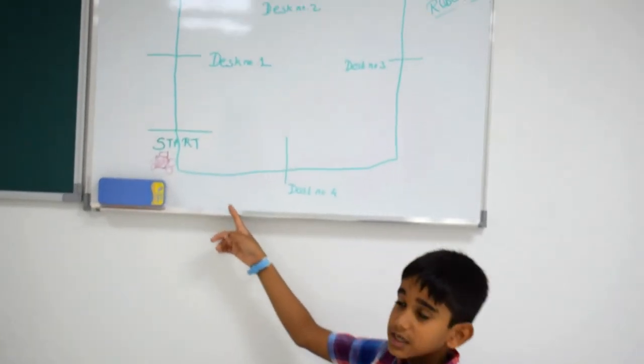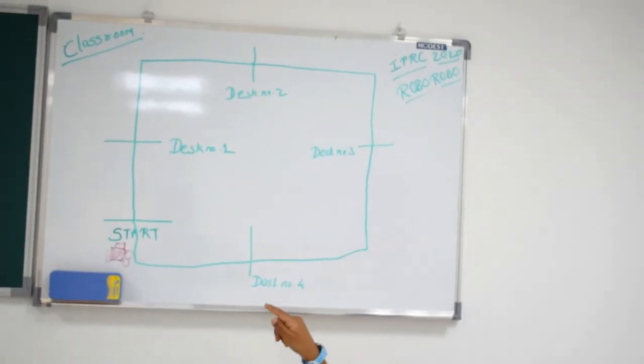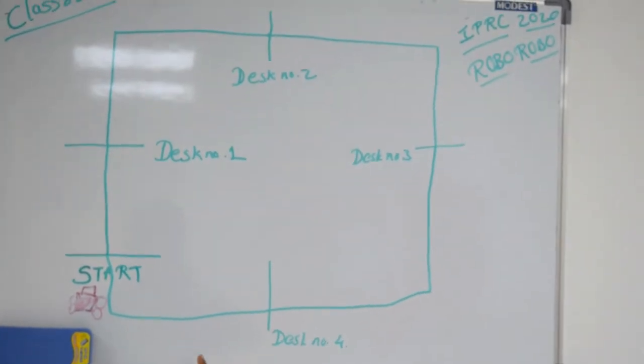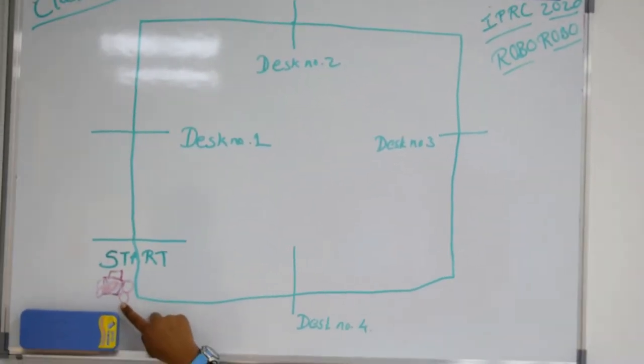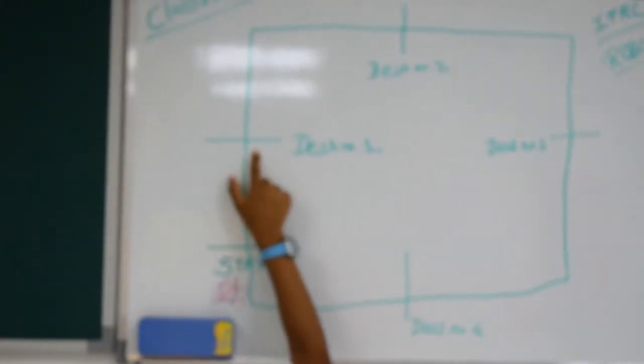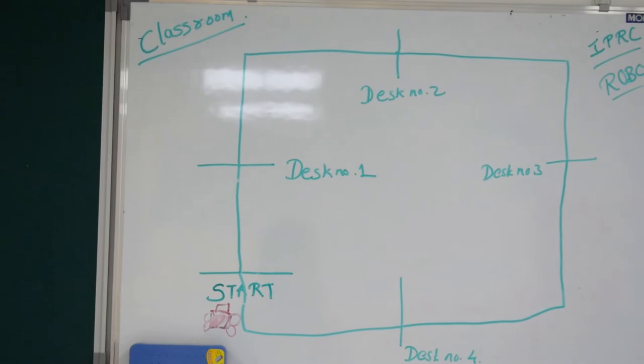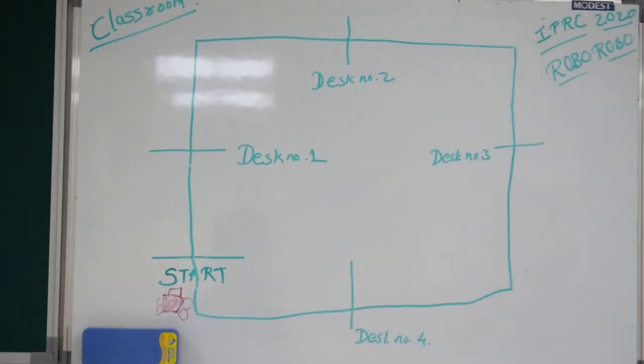So if you can see here, this is like a school, a classroom, and here is my bot. So if I start my bot, it goes to desk 1 and stops at the line. And as you can see, this is sanitizer over here.